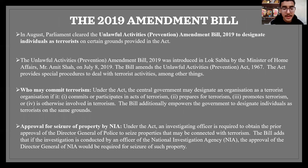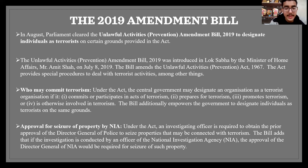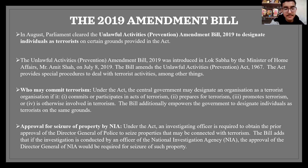Talking about the 2019 amendment bill, it was brought up to the Lok Sabha on July 8, 2019. The bill primarily had certain points that needed to be addressed, such as who may commit terrorism, giving the central government the power to designate any organization as a terrorist organization on four different grounds. Secondly, approval for the seizure of property by the National Investigation Agency — approval of the DGP is required by the investigating officer to seize properties that may be connected with terrorism. Thirdly, investigation of a case may only be conducted by officers of the rank of Deputy Superintendent or Assistant Commissioner of Police or above. Fourthly, to include acts committed within the scope of any of the treaties listed in the schedule of the Act.